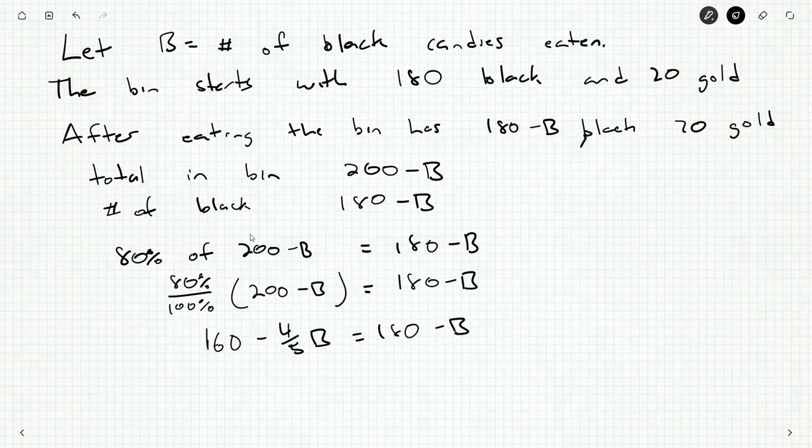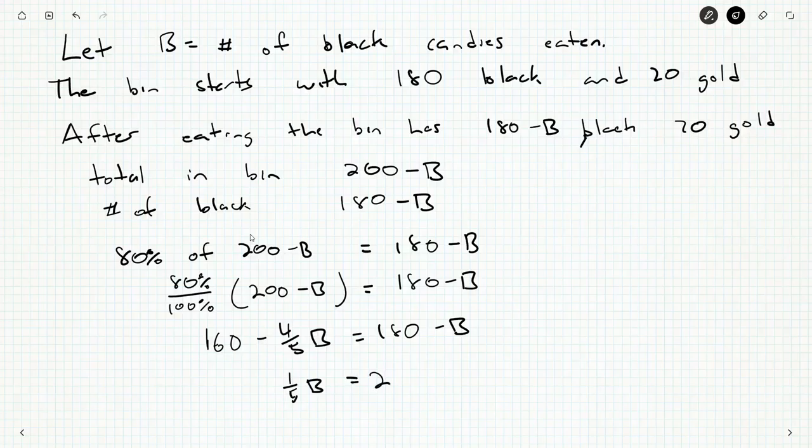160 minus four fifths B is equal to 180 minus B. We can rearrange, bring the B over here. We'll get one fifth of a B is 180 minus 160 or 20 multiplied by five. B is going to be equal to 100. And that's how many black candies we're eating.